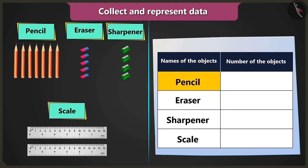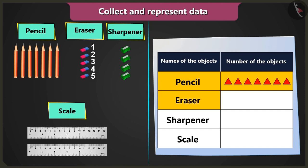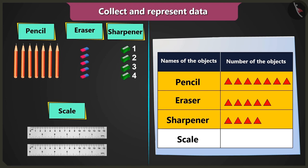You have seven pencils, so you have to draw seven triangles in the column 'count of objects'. I have five erasers, so I have to draw five triangles. I have four sharpeners, so I have to draw four triangles. And I have two scales, so I have to draw two triangles.